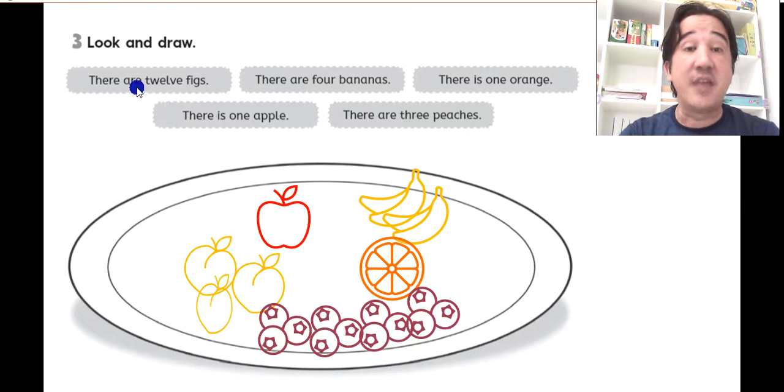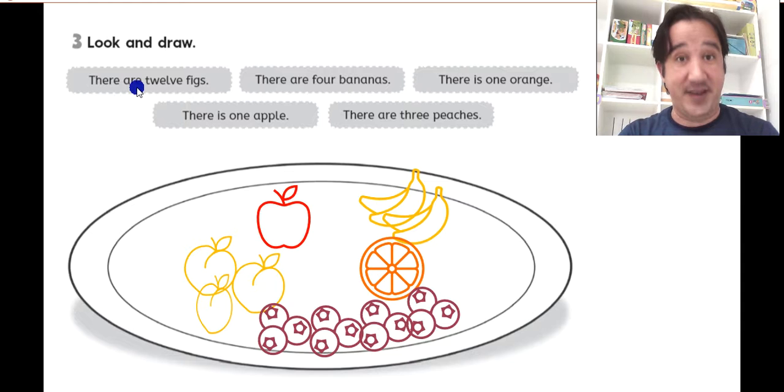Here says there are 12 things. There are 12. 1, 2, 3, 4, 5, 6, 7, 8, 9, 10, 11, 12 figs. Look I draw here. 1, 2, 3, 4, 5, 6, 7, 8, 9, 10, 11, 12. 12 figs.